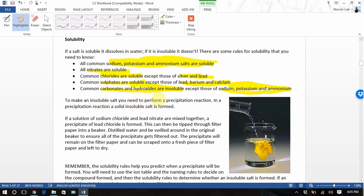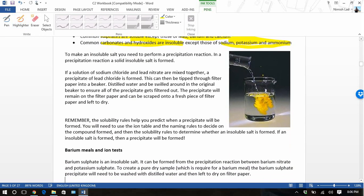To make an insoluble salt, you need to perform a precipitation reaction. In a precipitation reaction, a solid insoluble salt is formed. If the solution of sodium chloride and lead nitrate are mixed together, the precipitate of lead chloride is formed. Common chlorides are soluble, except for silver and lead. So lead chloride is insoluble. This can then be tipped off and filtered through a beaker. Distilled water can be swilled around in the original beaker to ensure all of the precipitate is out. The precipitate will then remain on the filter paper and can be scraped away. Remember, the solubility rules help you to predict when a precipitate will be formed. If it's insoluble, a precipitate is formed.